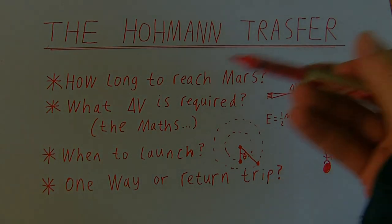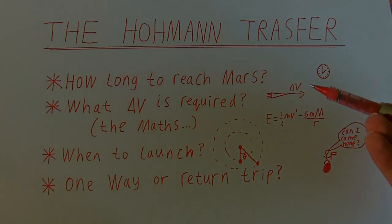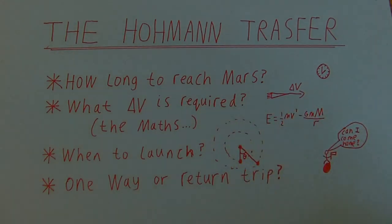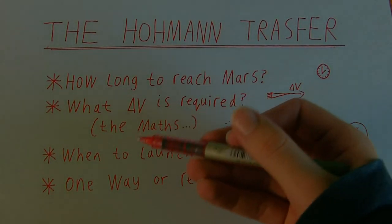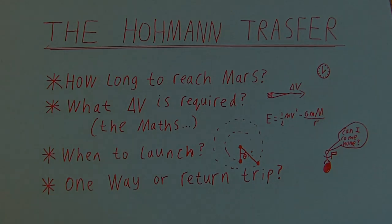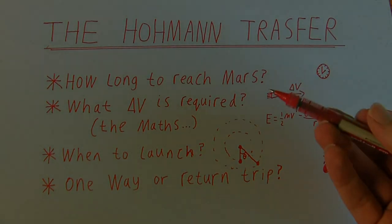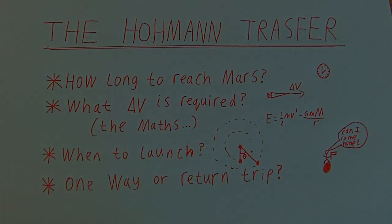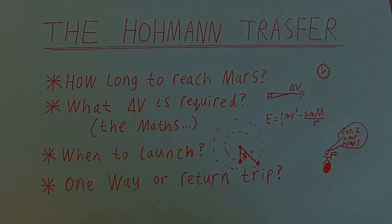Specifically, we're going to look at how long it actually takes to reach the planet Mars from the Earth, what delta V — or change in velocity — is required to make the trip. There will be a bit of maths involved, but feel free to skip ahead if you're just interested in the key result. Then we'll look at when you need to launch your rocket so you don't miss Mars, and finally whether we should do a one-way trip or a return mission to Mars.